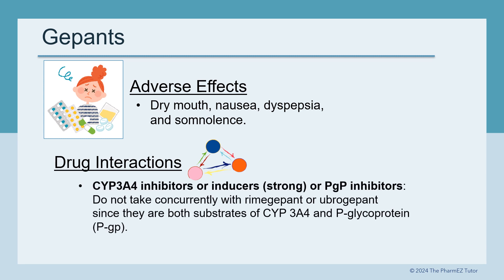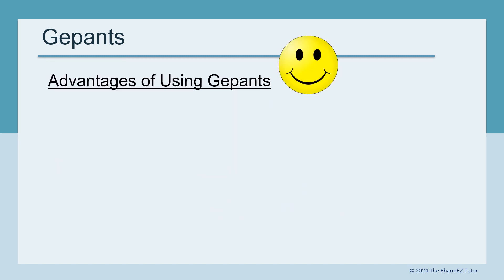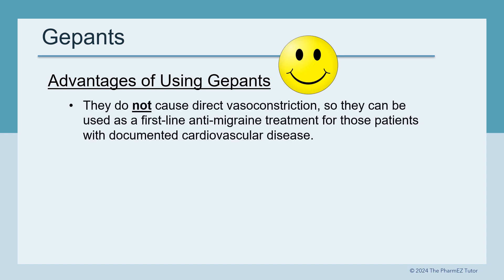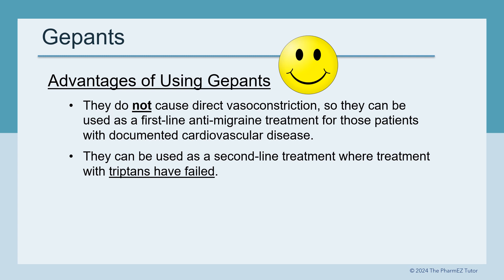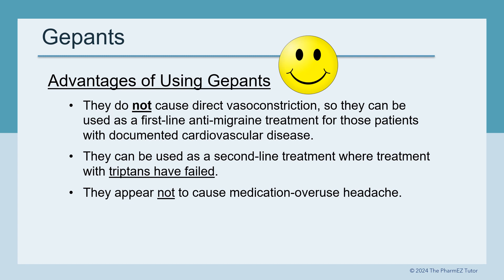Regarding drug interactions: CYP3A4 inhibitors or inducers that are strong, or PGP inhibitors, should not be taken concurrently with Rimegepant or Ubrogepant, since they are both substrates of CYP3A4 and PGP. As for advantages, G-PANs do not cause direct vasoconstriction, so they can be used as first-line anti-migraine treatment for patients with documented cardiovascular disease. They can also be used as second-line treatment where triptans have failed, and they appear not to cause medication overuse headache.